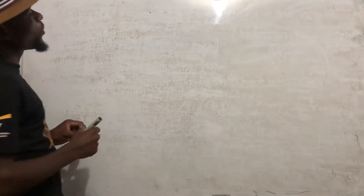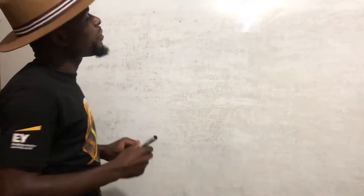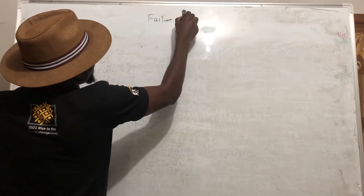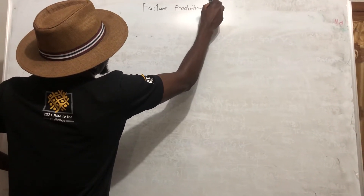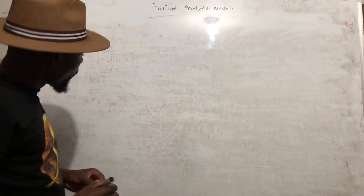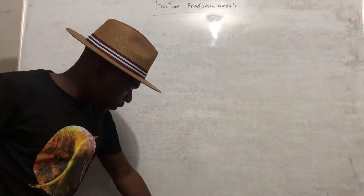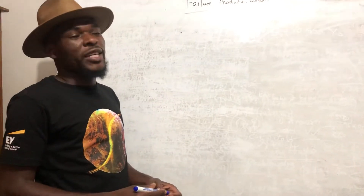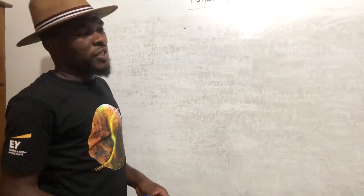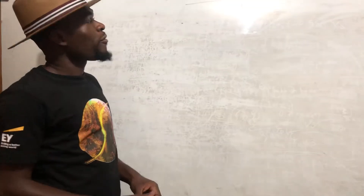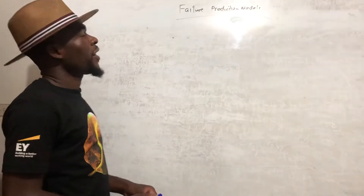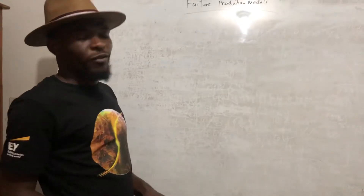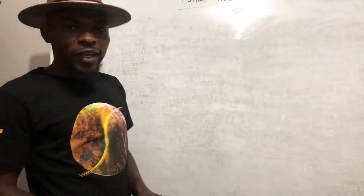Today we want to discuss what we call failure prediction models, or corporate failure prediction models. These combine traditional ratios into a single score that can tell us whether a company is going to fail, typically within the next one to two years, with a maximum of five years. The most prominent ones are the Altman Z-score, the Tafler Z-score, and we also have H-scores and A-scores.